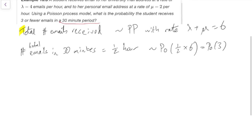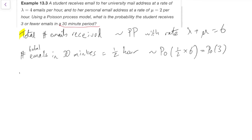So the thing in question, what's the probability the student receives three or fewer emails? It's the probability that a Poisson 3 is less than or equal to three. No easy way to do this one, I'm afraid. We just have to add up the probability that the Poisson 3 is zero, plus the probability it's one, plus the probability it's two, plus the probability that the Poisson 3 is equal to three.